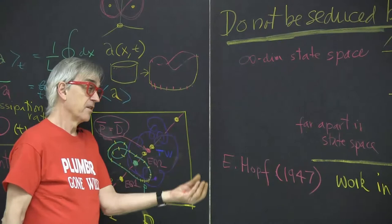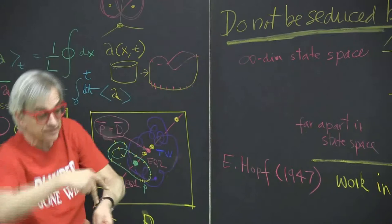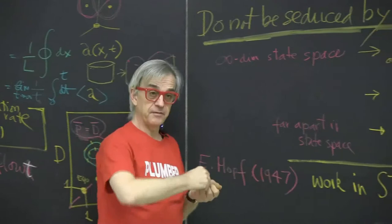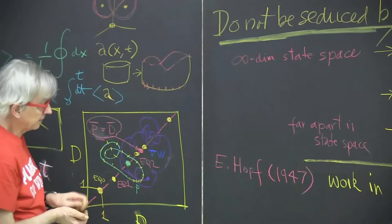It's just impossible to figure out that if I have four vortices here and two vortices there that I have to do this, like Houdini, to go from one to the other. But in state space, you will have a very clear itinerary how you do it.